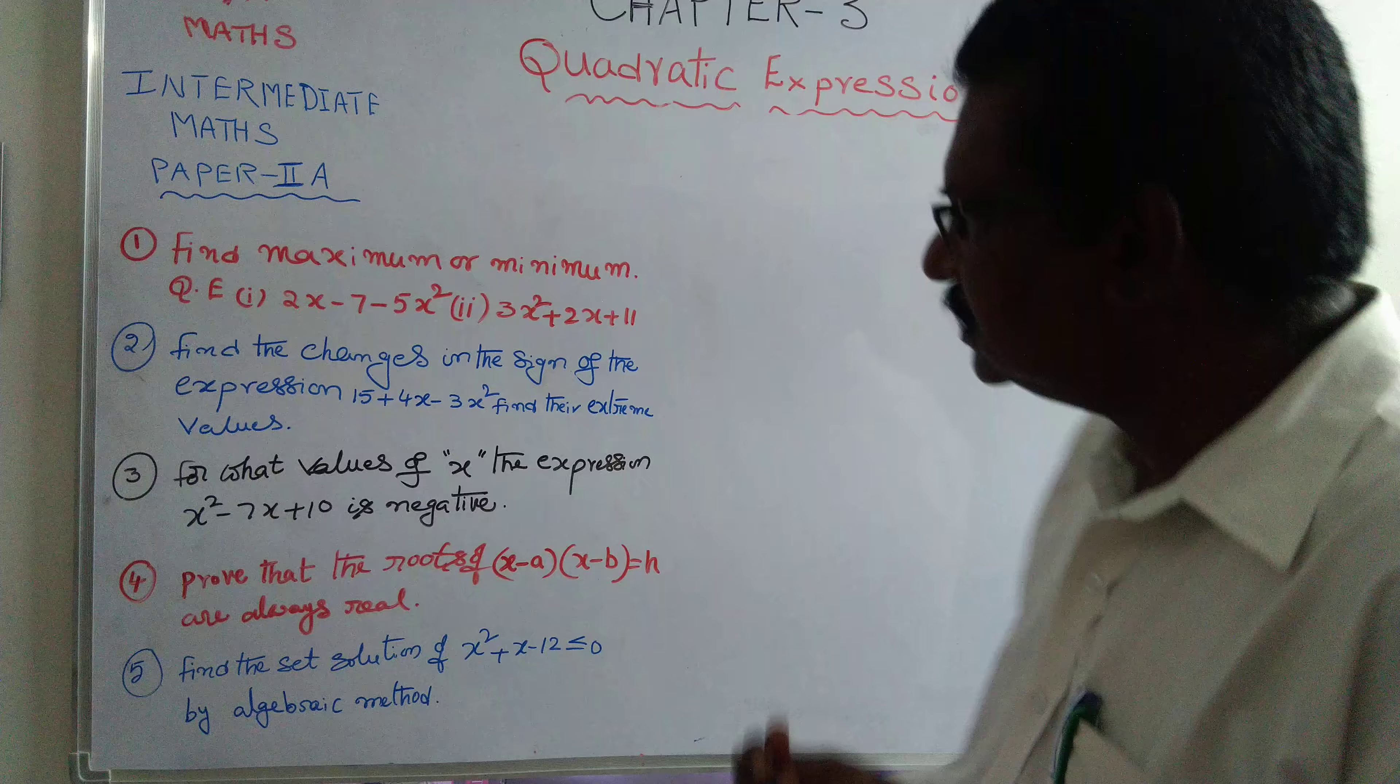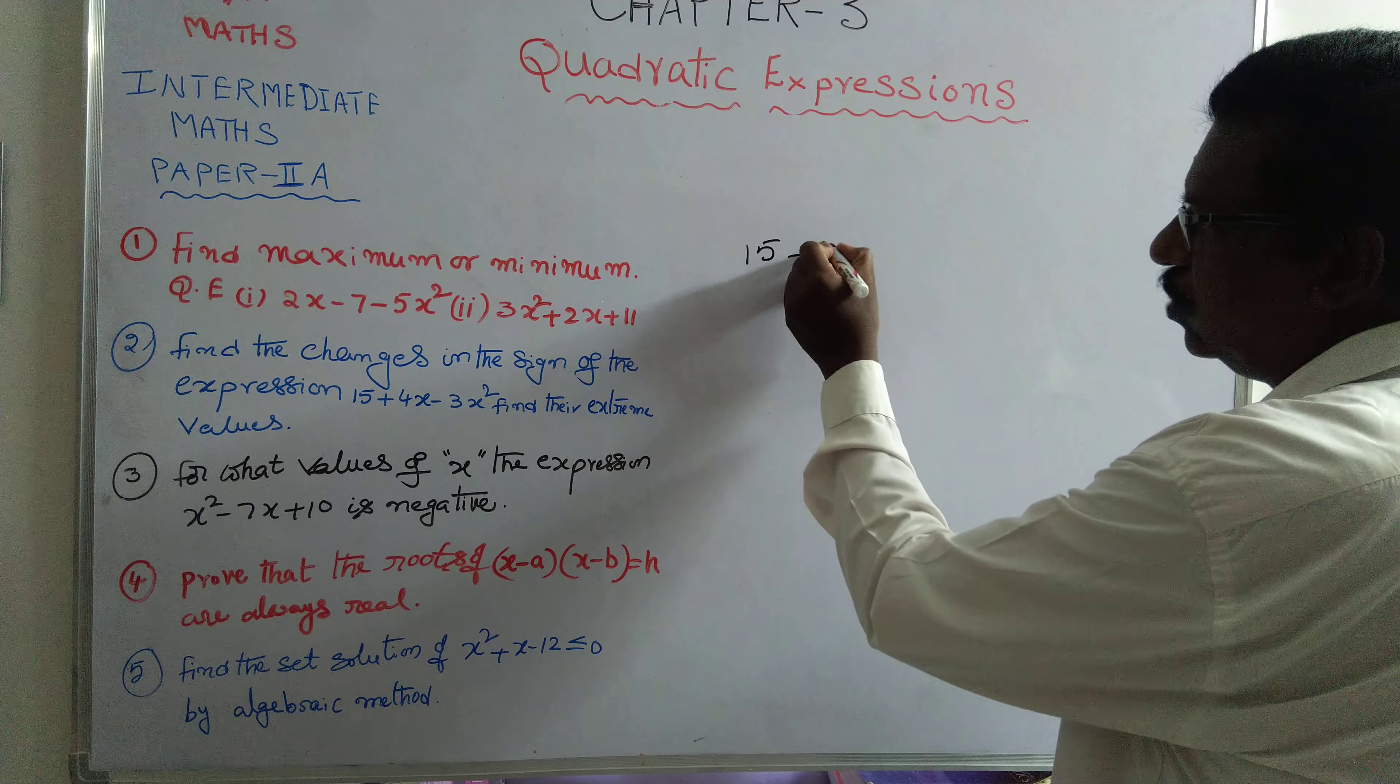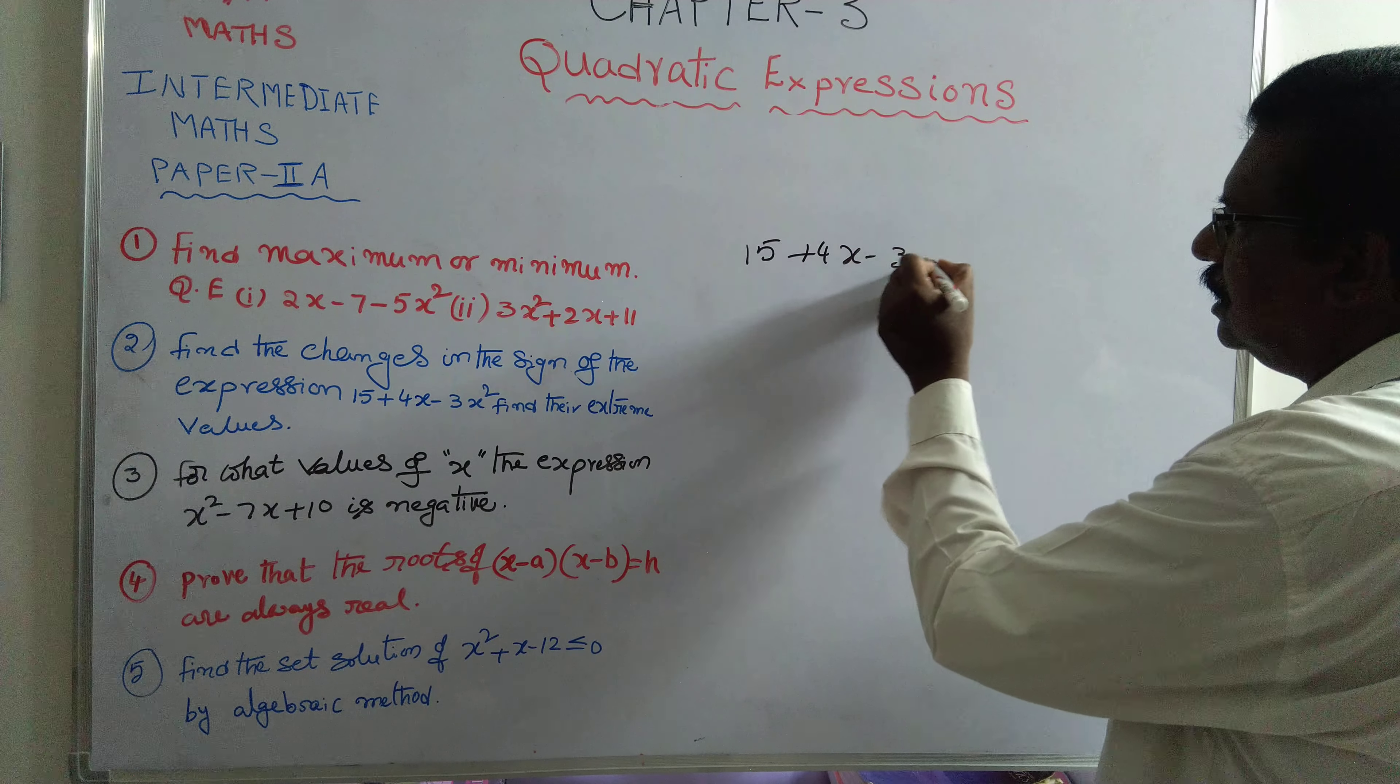You have to write the first given equation: 15 plus 4x minus 3x squared.